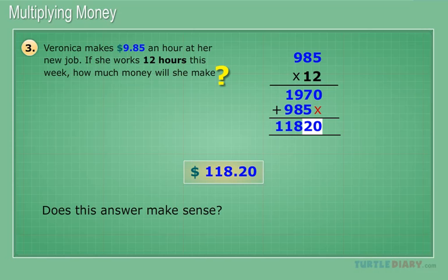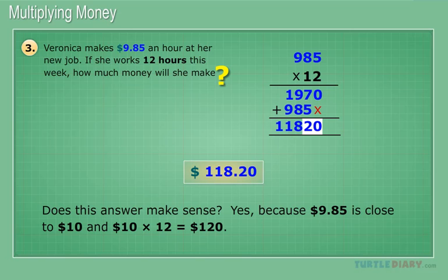Does this answer make sense? Yes, because $9.85 is close to $10, and $10 times 12 equals $120. Our answer is close to this.